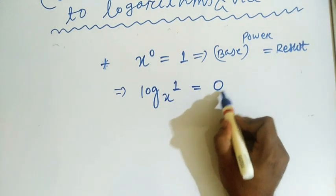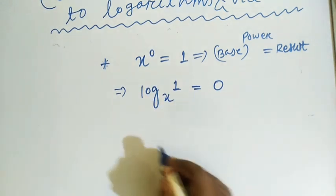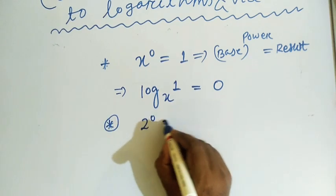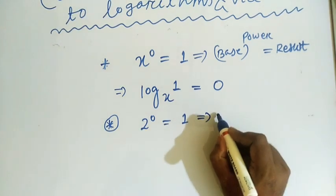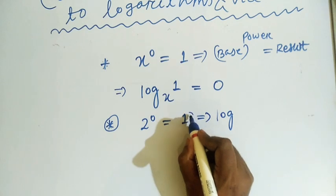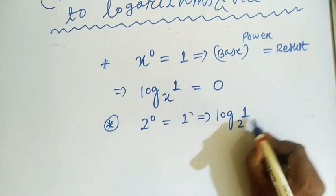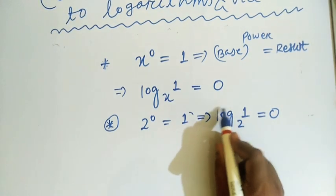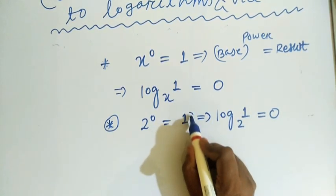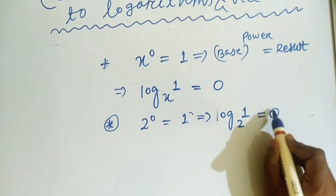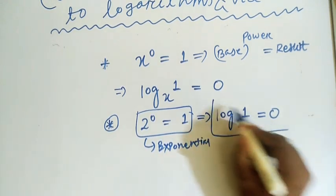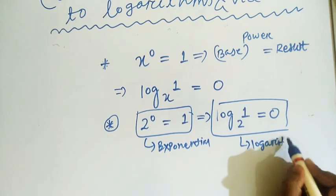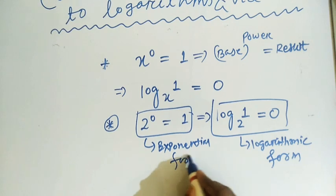Similarly, 2 to the power 0 is equals to 1. This is the exponential form. The logarithm form will be log of result, log 1 with base 2 is equals to 0. Log 1, this is the result of power form, with base 2 is equals to power. This is exponential, this is logarithmic.